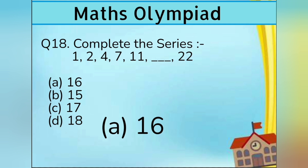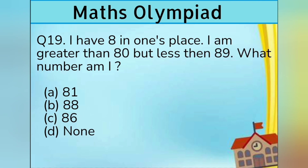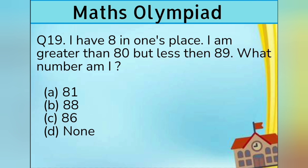Question number 19. I have 8 in the ones place. I am greater than 80 but less than 89. What number am I? Option A 81, Option B 88, Option C 86, and Option D none. Answer is Option B 88.